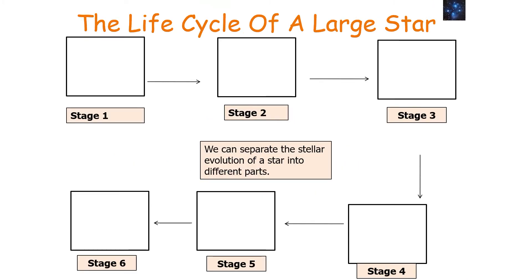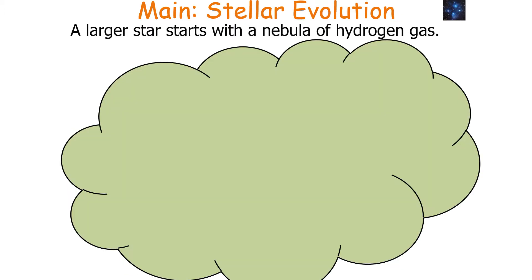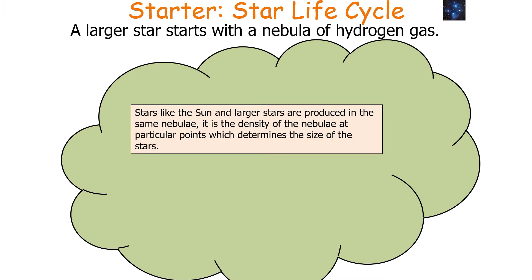We can separate the stellar evolution of a star into different parts, which is revision from GCSE physics. The beginning of a massive star's life cycle is very similar to that of an average star. The only difference is there is more matter present, so the stages the star goes through until the red giant stage are identical. A larger star starts with a nebula of hydrogen gas. Stars like the sun and larger stars are produced in the same nebula — it's the density of the nebula at particular points which determines the size of the stars.